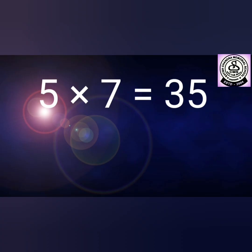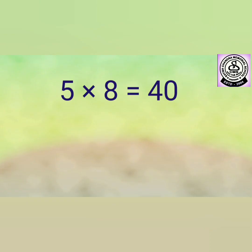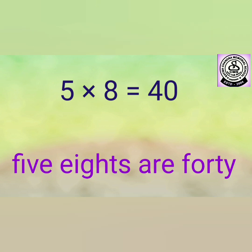Five sevens are thirty-five. Say with me — five sevens are thirty-five. Five sevens are thirty-five. Five eights are forty. Five eights are forty. Five eights are forty.